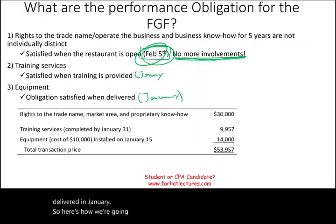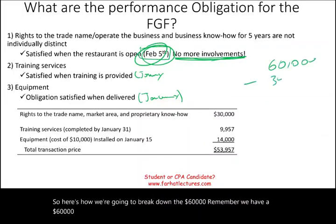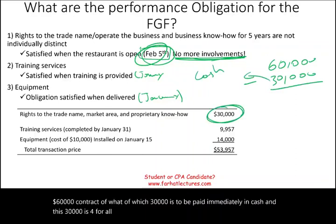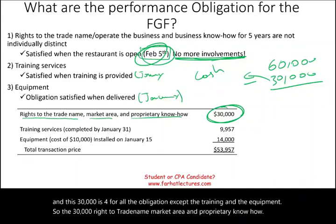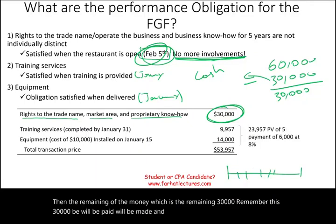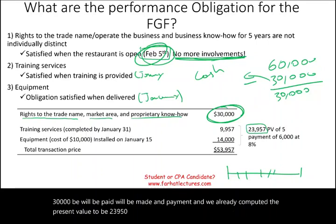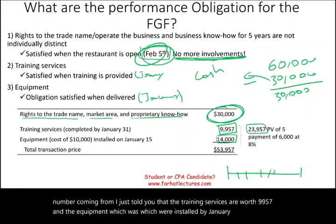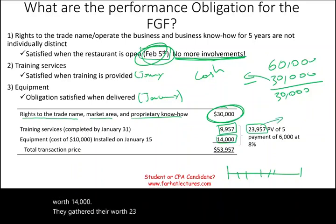Here's how we break down the $60,000. We have a $60,000 contract of which $30,000 is paid immediately in cash — this covers the right to trade name, market area, and proprietary know-how. The remaining $30,000 is the note, with a present value of $23,957. Of that $23,957, training services are worth $9,957 and equipment is worth $14,000, together equaling $23,957. So the total transaction price is $53,957.